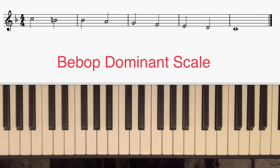And the reason that added passing note is there is so that if you start a line on a downbeat on a chord note, it doesn't matter which direction the scale goes, you will always play chord notes on the downbeat and that leads to a smooth line.